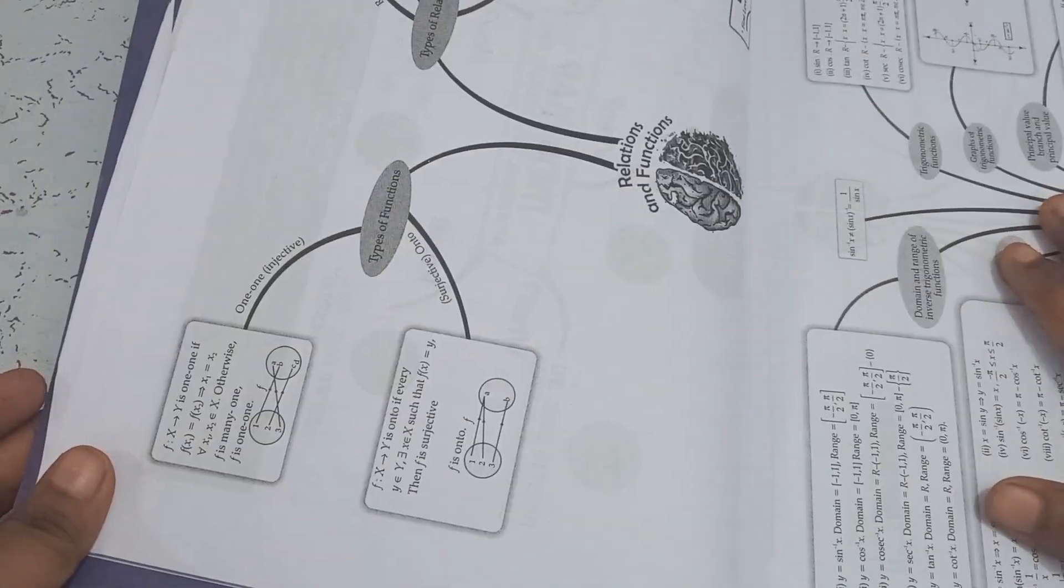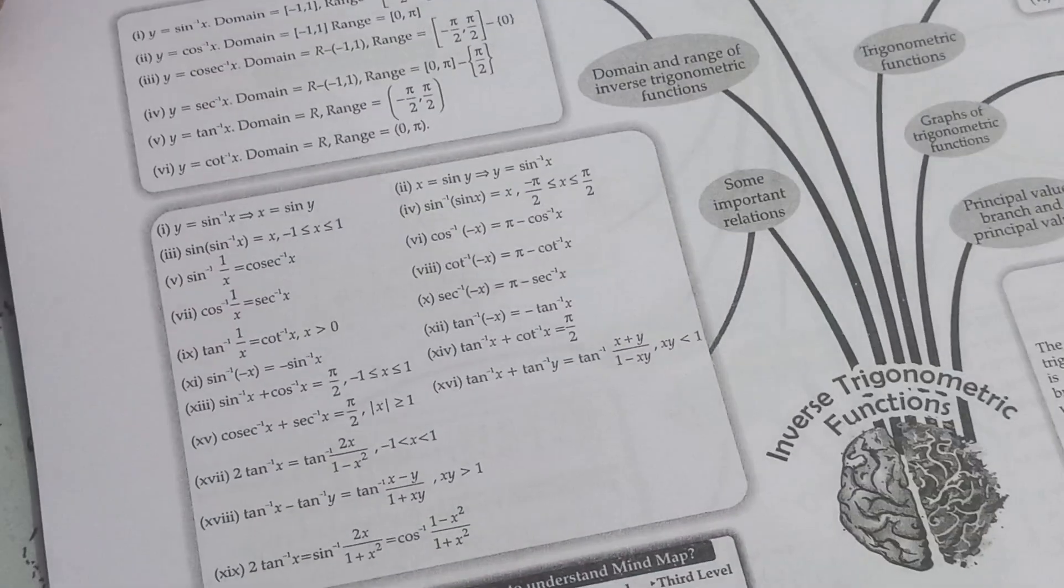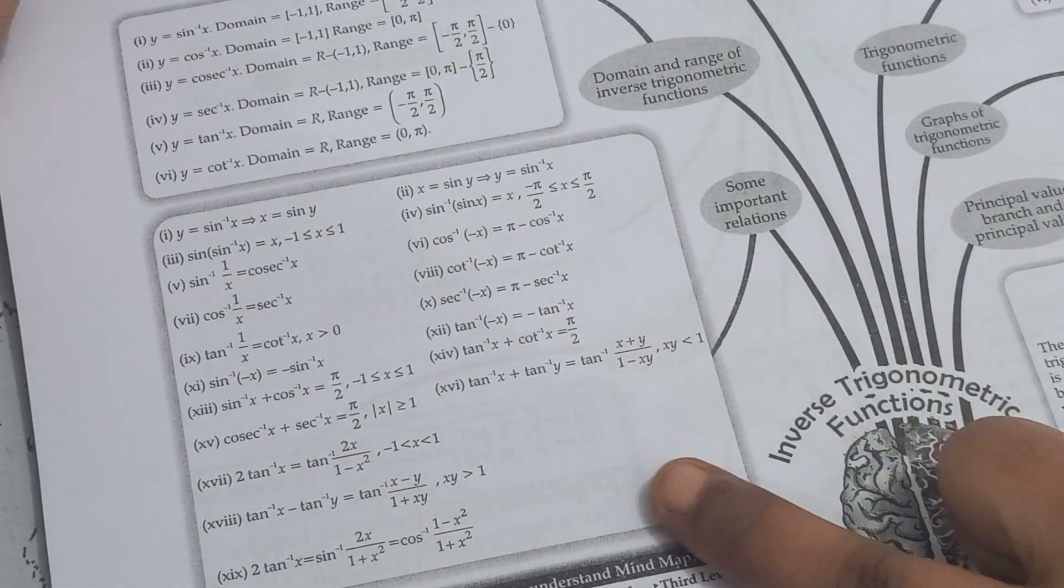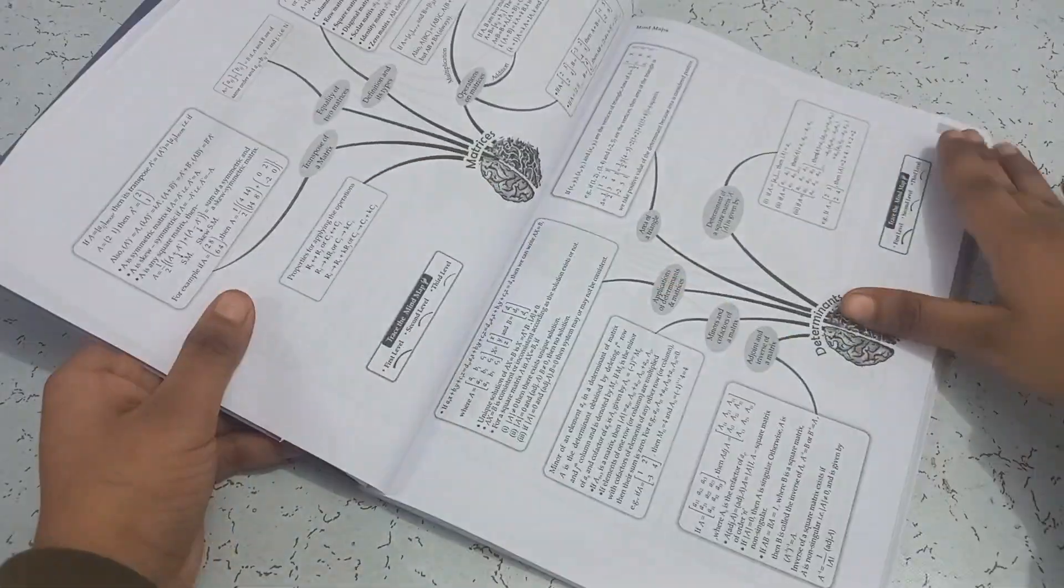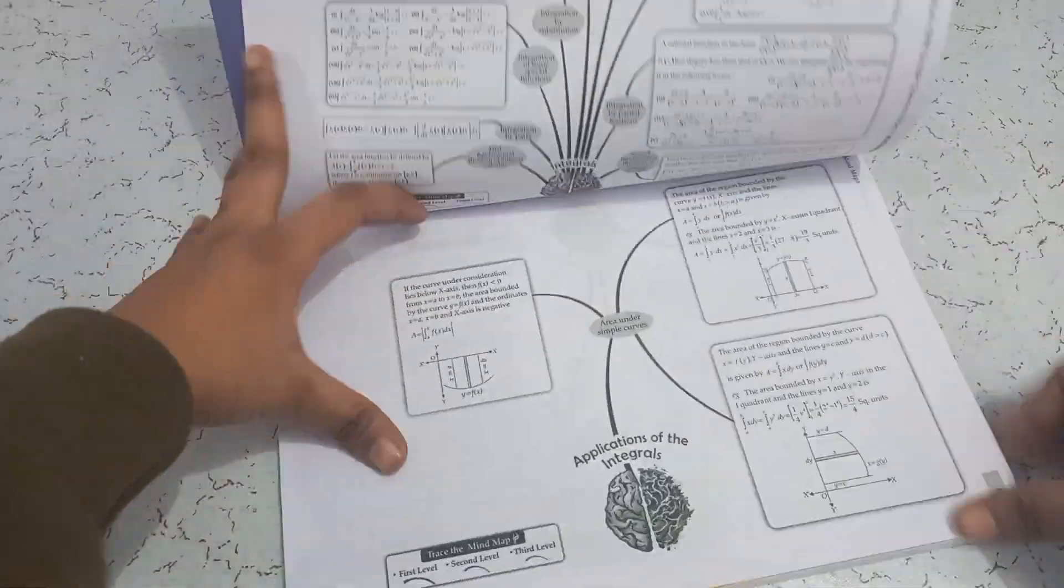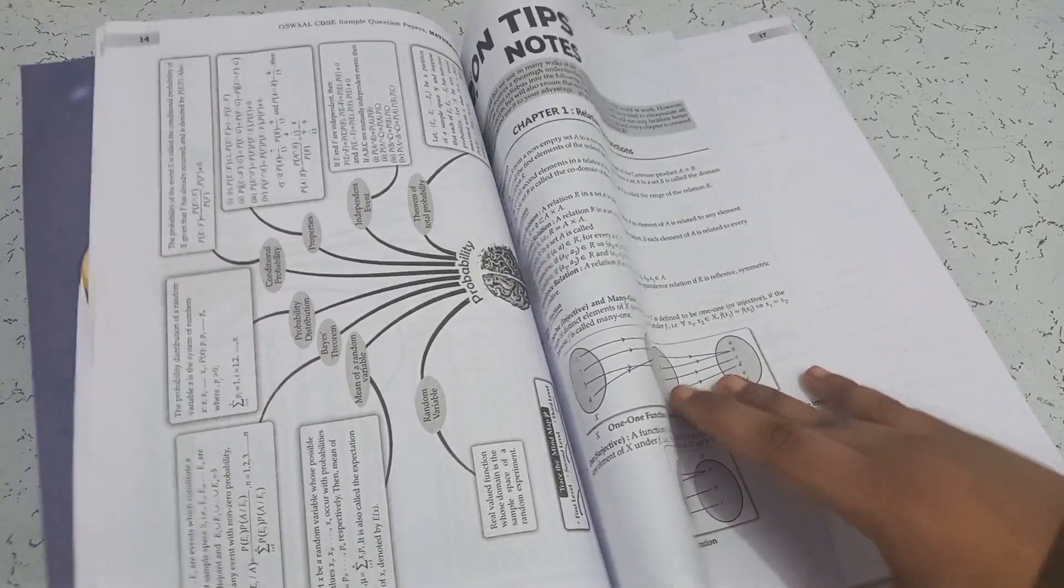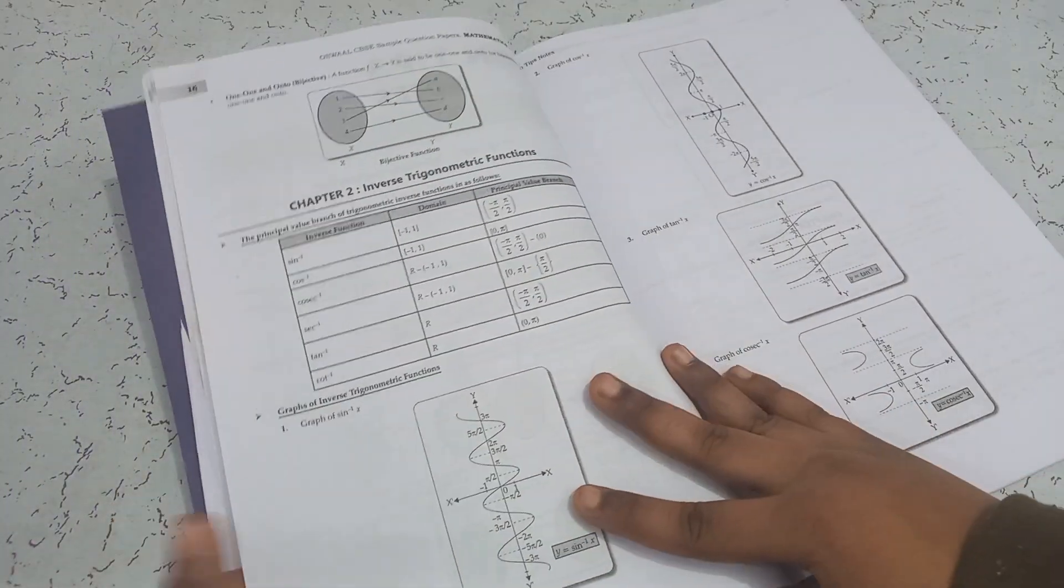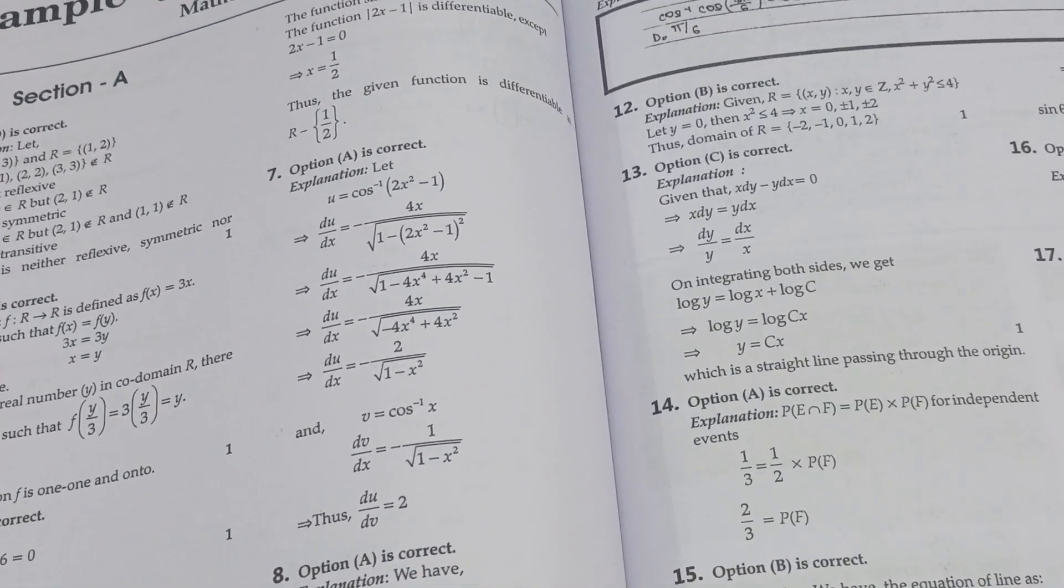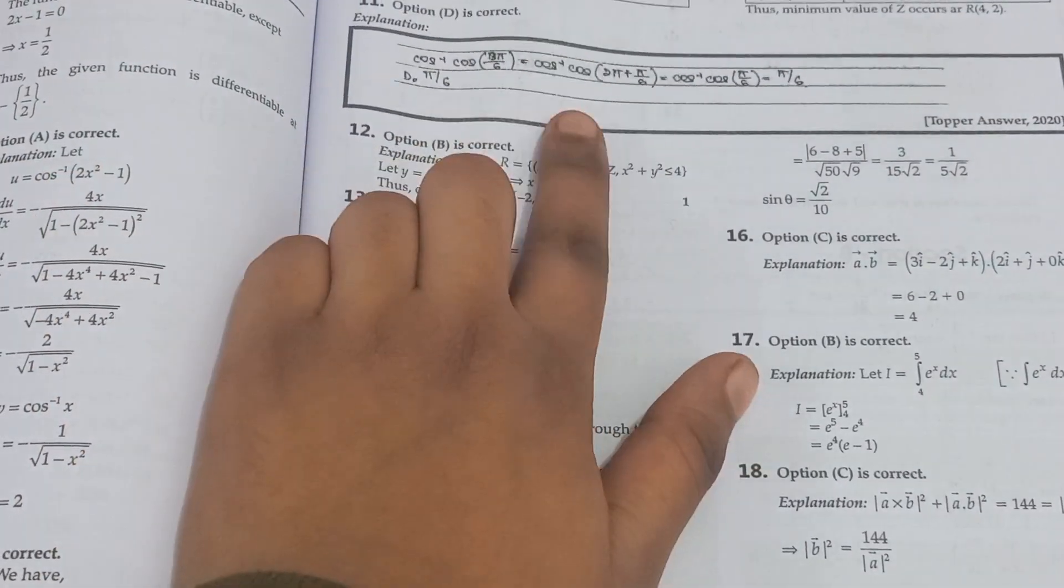Here's the mind map. One-tip notes of just one page. It also has QR codes in between to scan and check the answers. Now, this sample question paper also contains Toppers Answers.